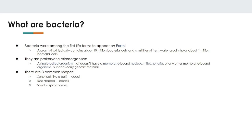We're going to start our discussion with bacteria. Bacteria were probably the first forms of life to appear on Earth, specifically cyanobacteria. There are a lot of bacterial cells and they are very small — 40 million in a gram of soil, 1 million in a milliliter of water, and we have a lot of them in our bodies as well. Bacteria are very simple organisms. They're prokaryotes — they have no membrane-bound nucleus or organelles. Generally they have three most common shapes, though there are more.